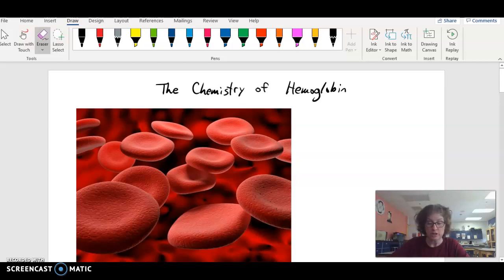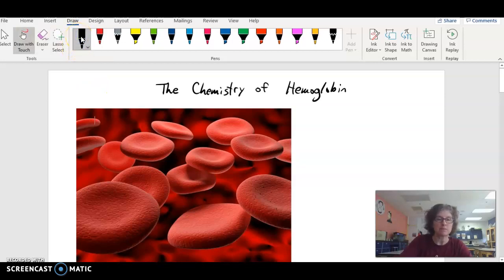Hi, this is Mrs. Murdoch, and this is my talk on the chemistry of hemoglobin. So hemoglobin is one of my favorite proteins. It comes up again and again in the AP Bio class, and it's a really good molecule to become familiar with and a good example of a protein that shows all four levels of structure.